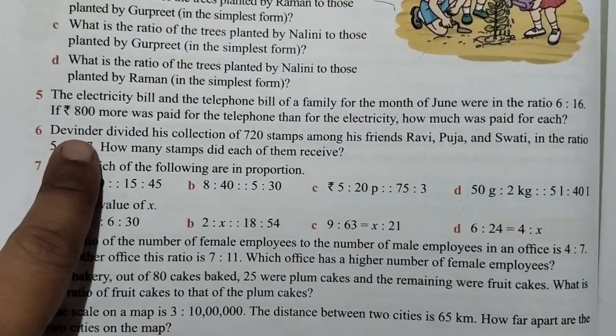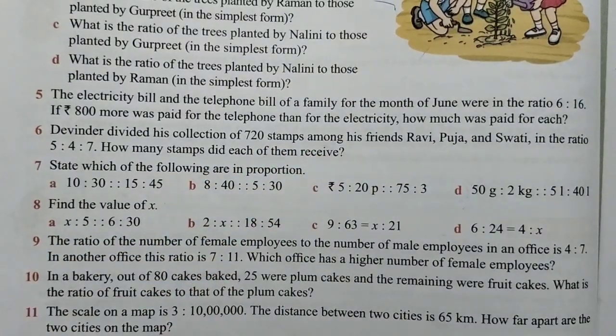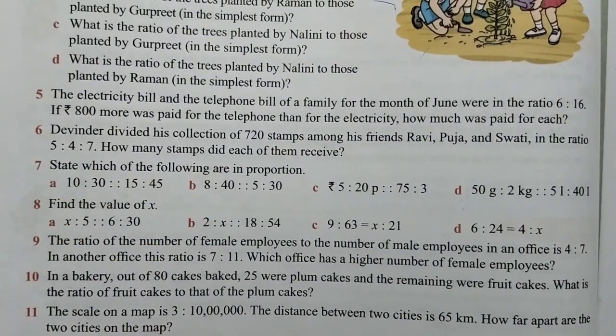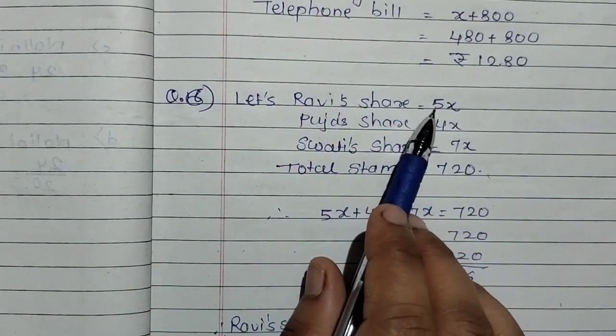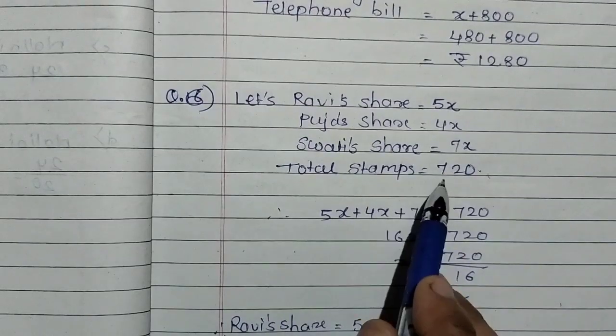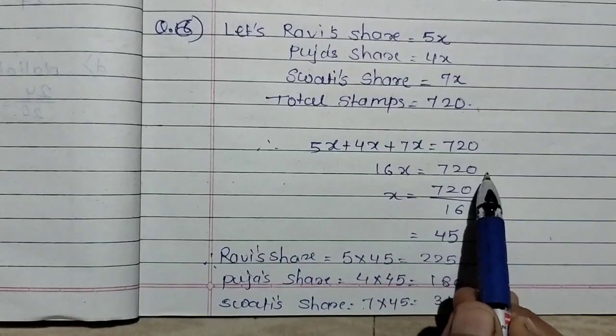Question number 6: Divyesh divided his collection of 720 stamps among his friends Ravi, Pooja and Swati in the ratio of 5 is to 4 is to 7. How many stamps did each of them receive? Divyesh has 720 stamps. He distributed them to Ravi, Pooja and Swati.